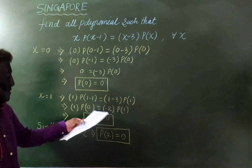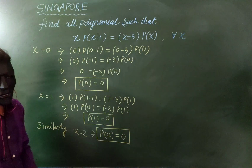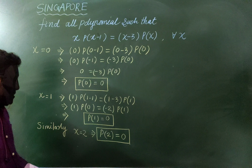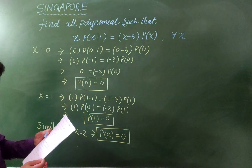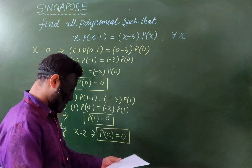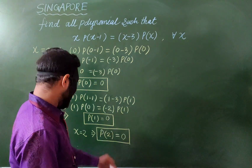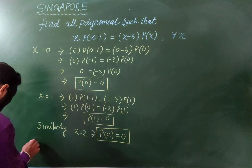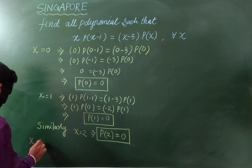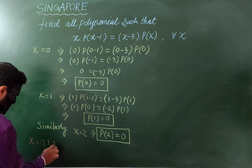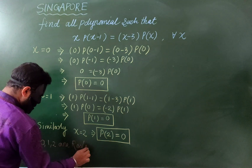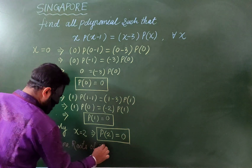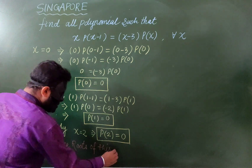So these three things are zeros of this polynomial. This is a very important finding: x equals 0, 1, and 2 are all roots of this polynomial.